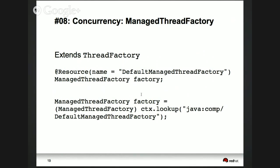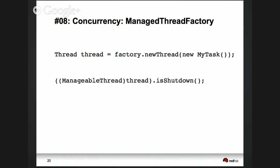The next object is ManagedThreadFactory, very much like ThreadFactory. All threads created from this ManagedThreadFactory are managed by the application server. Once you get a factory, you can create a new thread from it, and that thread is now managed by the container — which was not possible in Java EE6. You can pass a task to it. The managed thread has one additional method to check whether it's shut down or still running.